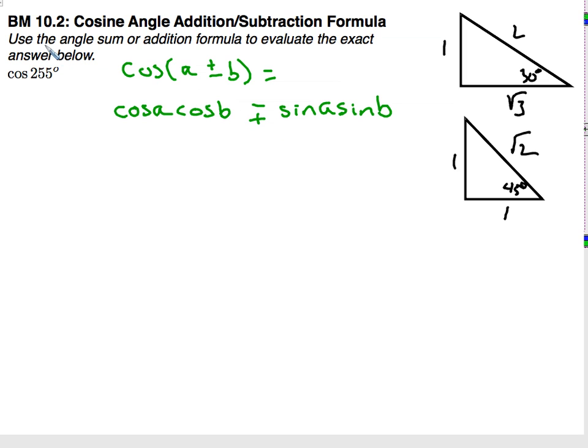So here we have to use the angle sum or addition formula to evaluate the exact answer below. Cosine of 255 degrees. So our task is to first identify which two angles we can use.